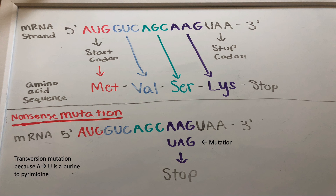Next is a nonsense mutation. A nonsense mutation is when the mutation causes the codon to code for a stop codon. Here, AAG codes for the LYS amino acid, but when mutated to UAG, it codes for a stop codon. This is a transversion mutation because the base is changing from A to U.